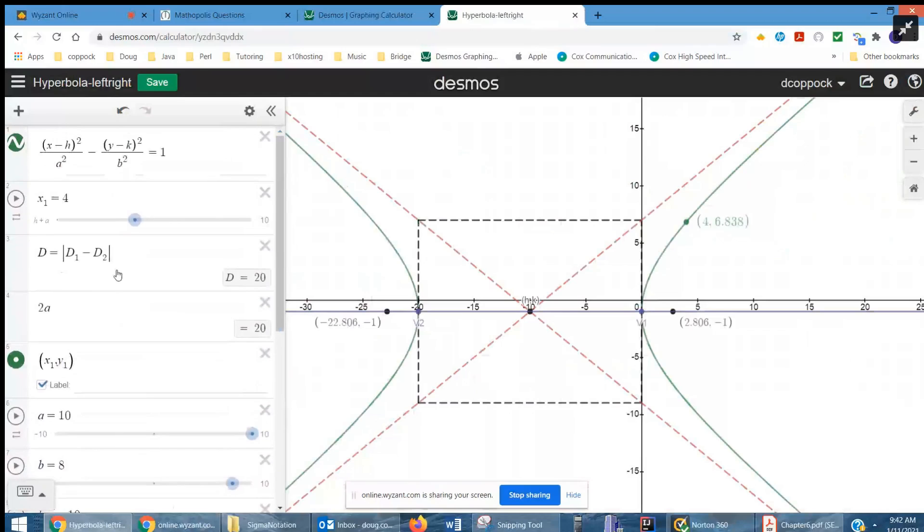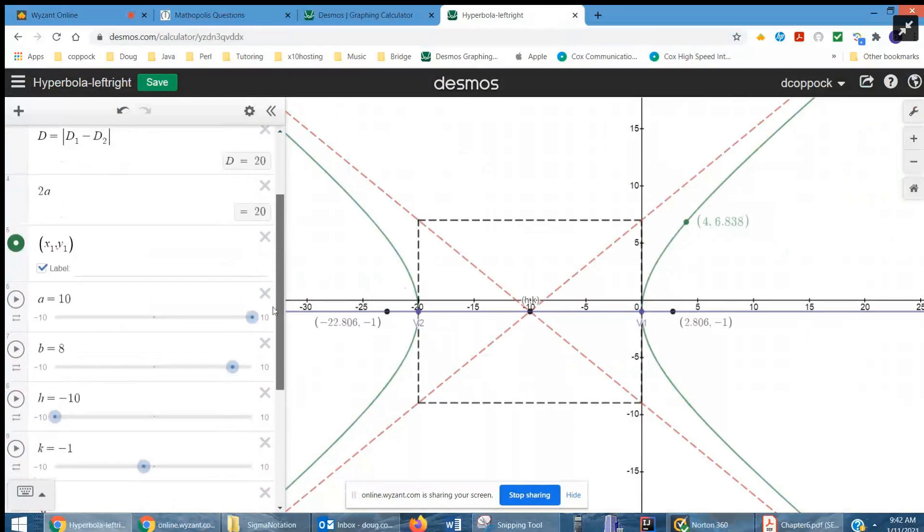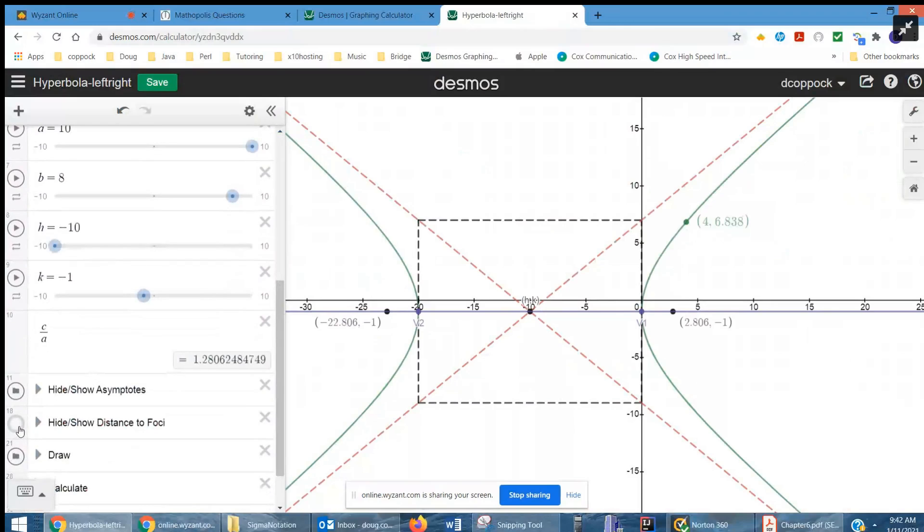And show you what this hyperbola looks like with the point moving around on it. This d1 minus d2, that's the distance from a point on the hyperbola to each of the foci.